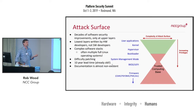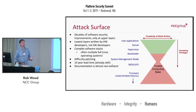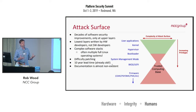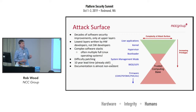The lead time on some of these parts is like 10 years, so by the time they hit the market, they're already old. Things like privilege separation, address randomization — these are technologies we've had forever at the top of this diagram. But at the bottom, they just don't exist. These concepts are totally foreign to them.